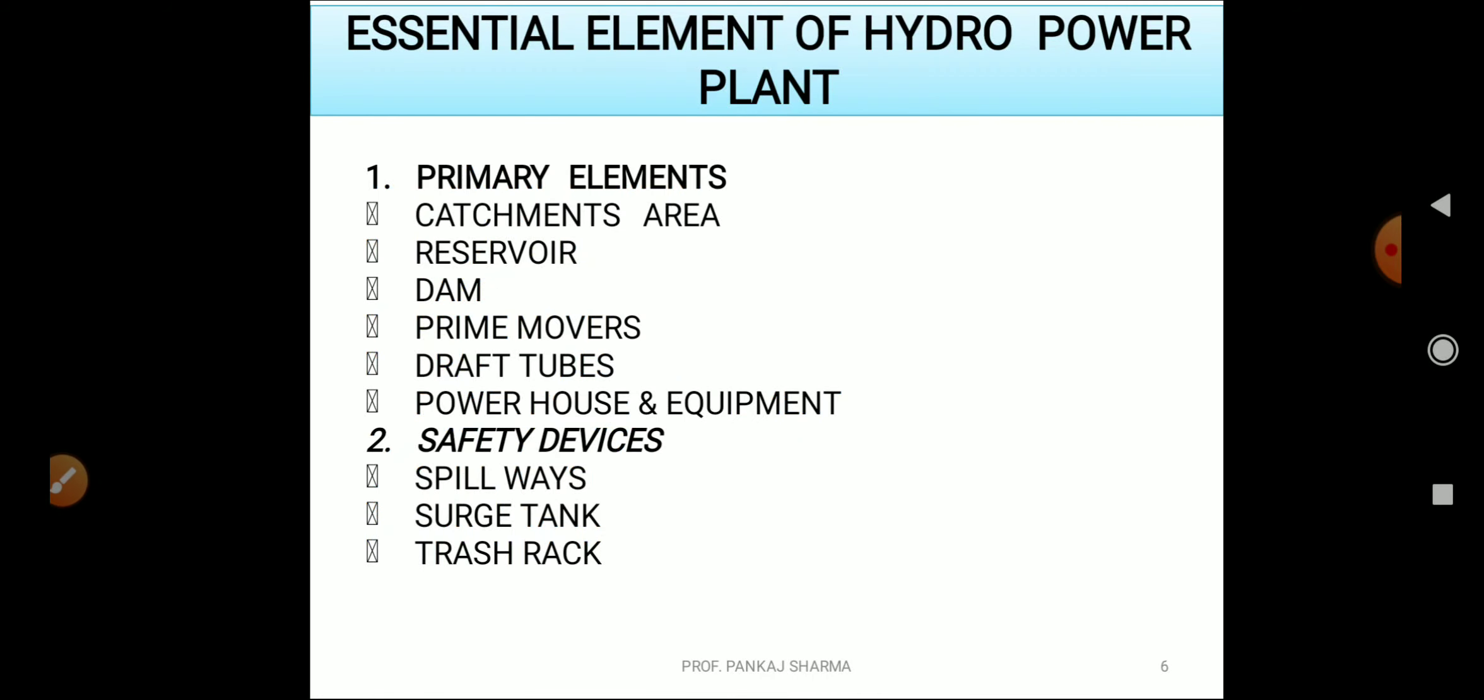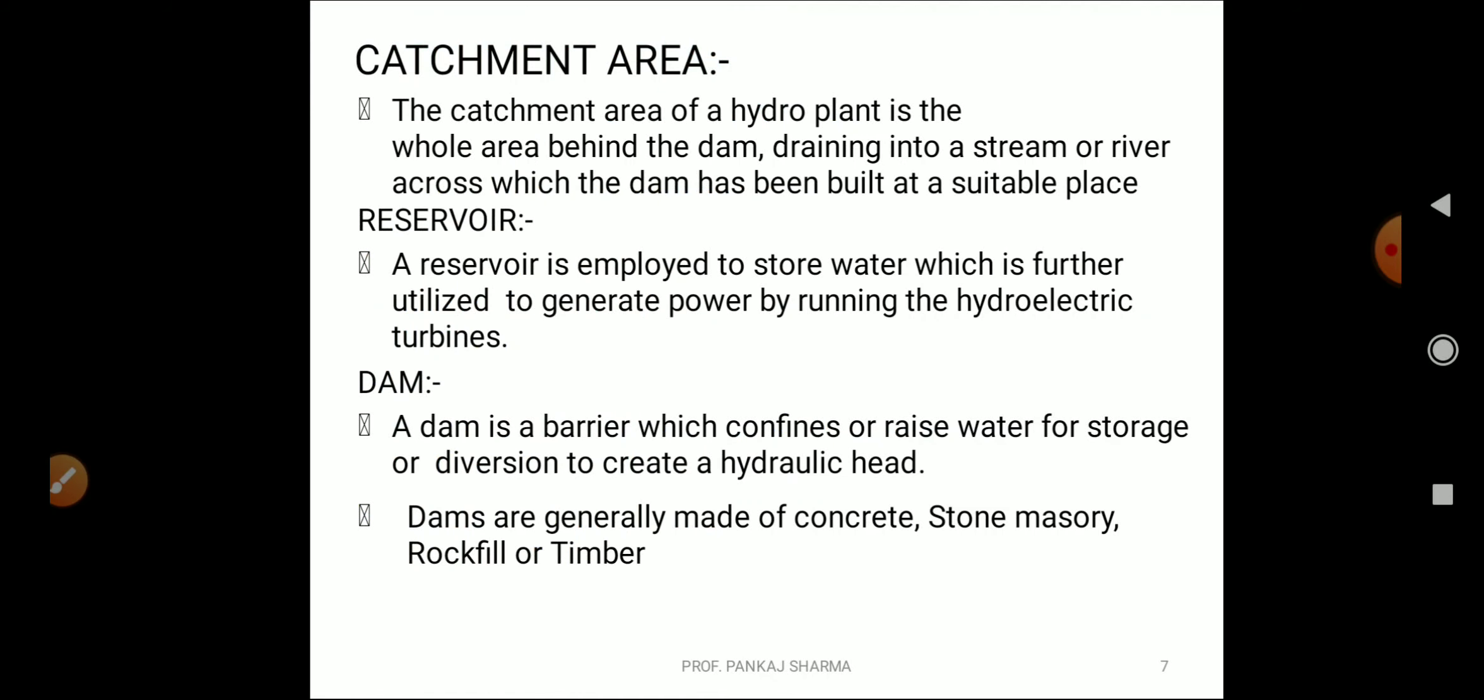Now coming to essential elements of hydropower plant. Number one: primary elements - catchment area, reservoir, dam, prime movers, draft tubes, powerhouse and equipment. Number two: safety devices - spillways, surge tank, trash rack. Let us understand each one of these components individually. Now what is meant by catchment area? The word catch makes it clear.